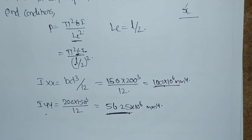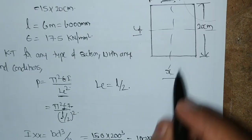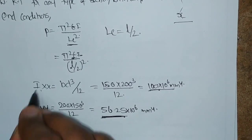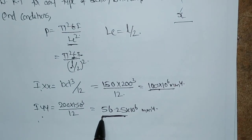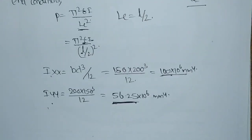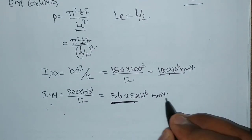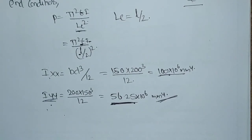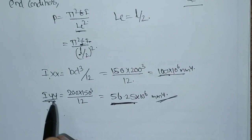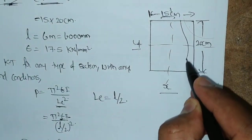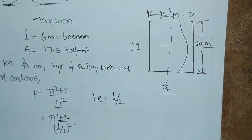It is confirmed that therefore the column will tend to buckle only in the y direction. If the moment of inertia - whichever is the lesser value, whether in x direction or y direction - the buckling effect will take place in that direction only. Here the lesser value is in the y direction, so the buckling effect is going to take place in the y direction only. The column is going to bend.